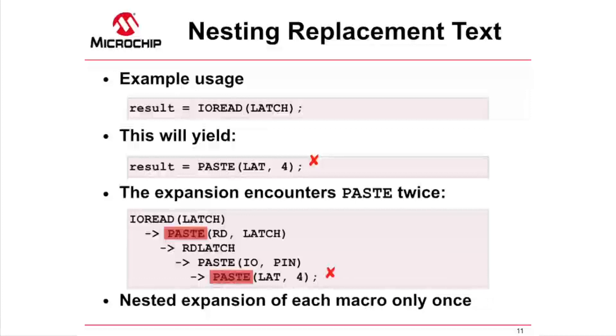The problem is in the last three lines of the example code shown on the previous slide. These violate another preprocessor rule, which states that if any nested replacements encounter the name of a macro currently being expanded, it is not considered for further replacement. In our case here, the expansion of IOREAD involves expanding the macro PASTE that forms RDLATCH, but the expansion of this macro requires expanding PASTE for a second time. The second expansion is not performed due to this rule, and so we see it remain unexpanded in the final output.